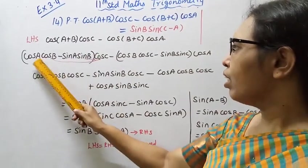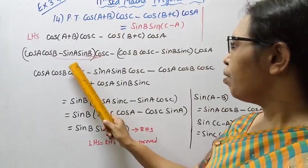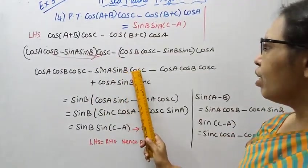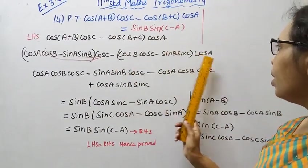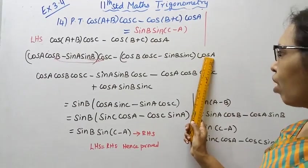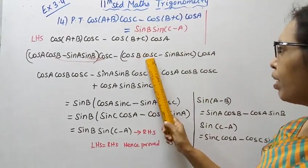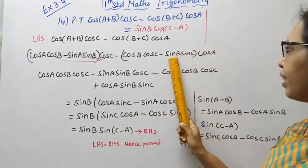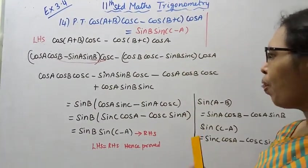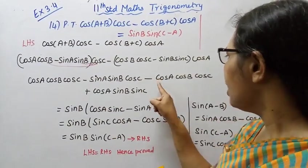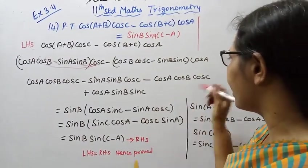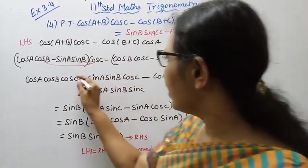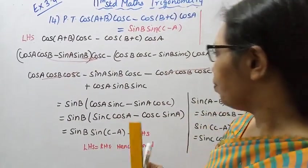Cos A cos B cos C minus sin A sin B cos C. Then minus cos A cos B cos C, minus into minus plus cos A sin B sin C. Now cos A cos B cos C minus and cos A cos B cos C minus cancel out.